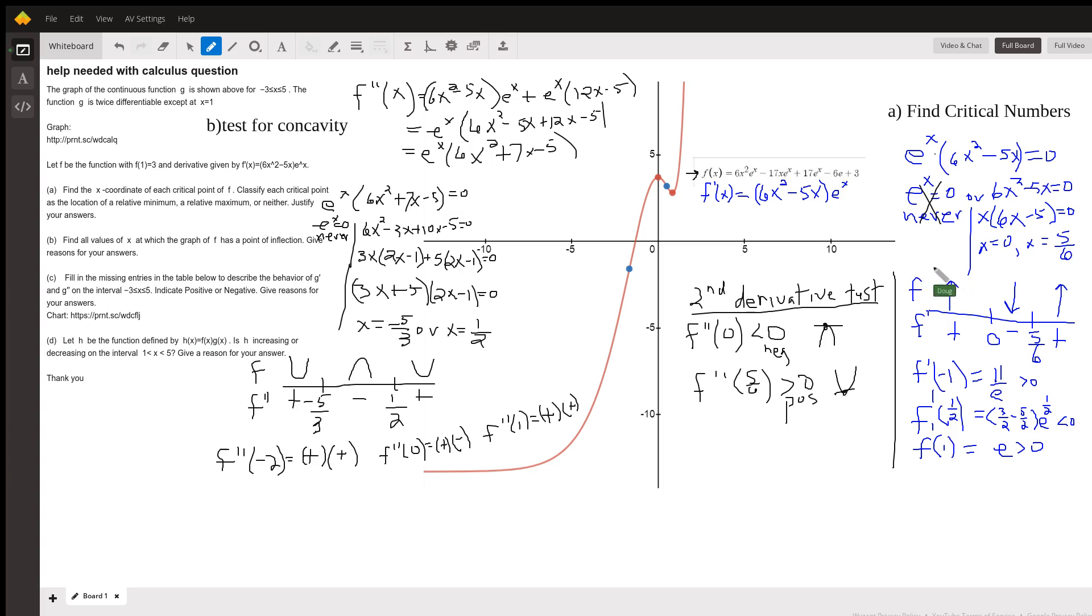Now, we can use the first derivative test to find out whether those critical numbers give us relative maximums or relative minimums or neither. If we put those critical numbers on a little number line and then choose test numbers in each of the intervals created. For example, if we find f prime of negative 1, that means put negative 1 in here for x in 6x squared minus 5x e to the x, we get a positive number. And when f prime is positive, the original function is increasing.